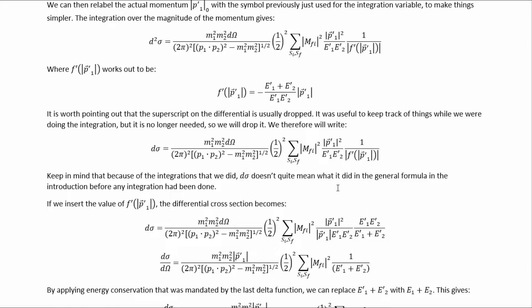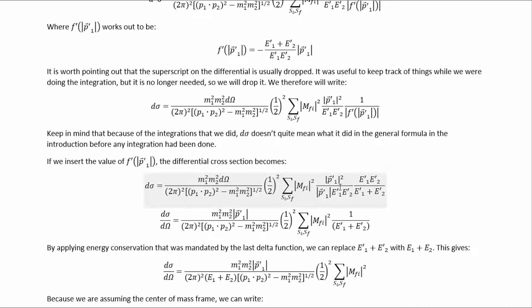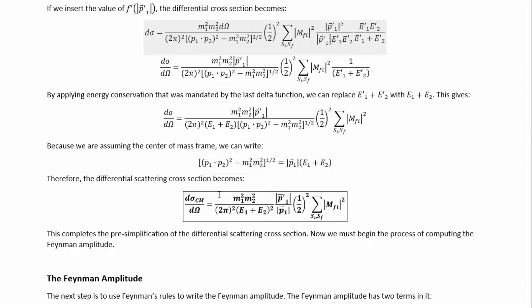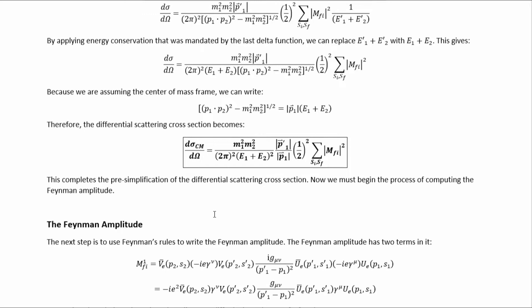Keep in mind that because of the integrations that we did, dσ doesn't mean quite what it did in the general formula at the beginning, where we had all the momentum variable differentials unintegrated. If we insert the F prime function, the differential scattering cross-section becomes a simplified form because of a nice cancellation. By applying energy conservation mandated by the last delta function, we can replace one quantity with another, and because we're assuming the center of mass frame, we can rewrite further, which finally gets us to the pre-simplified differential scattering cross-section. This completes the pre-simplification; now we must begin handling the Feynman amplitude.